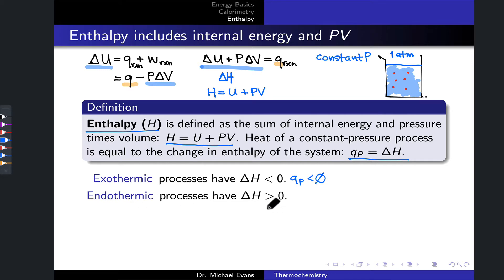Endothermic processes have delta H greater than zero. And this again relates to QP or what we called Q reaction up here having a positive value as well. We commonly think in terms of delta H rather than the heats